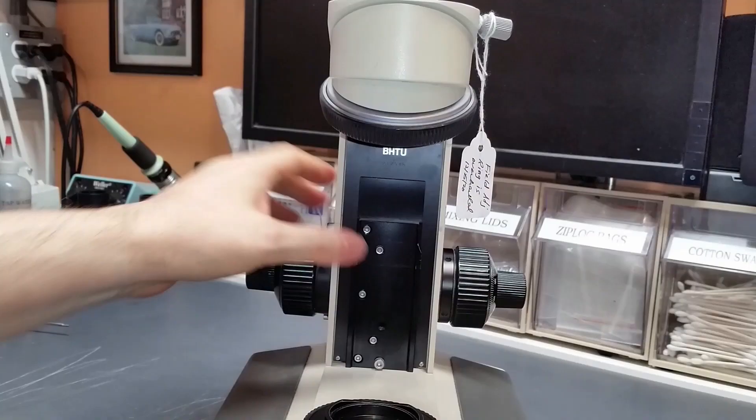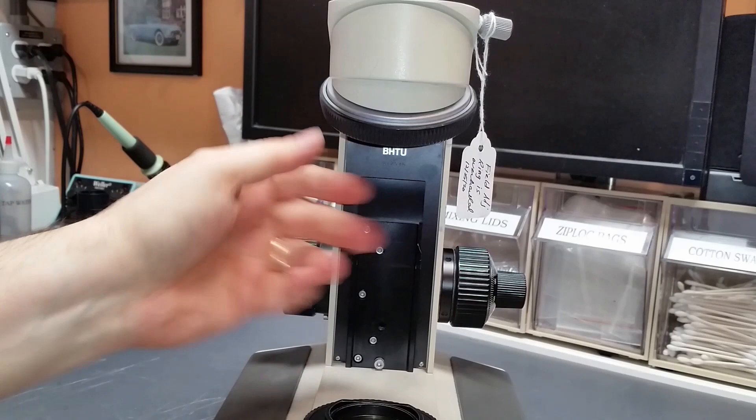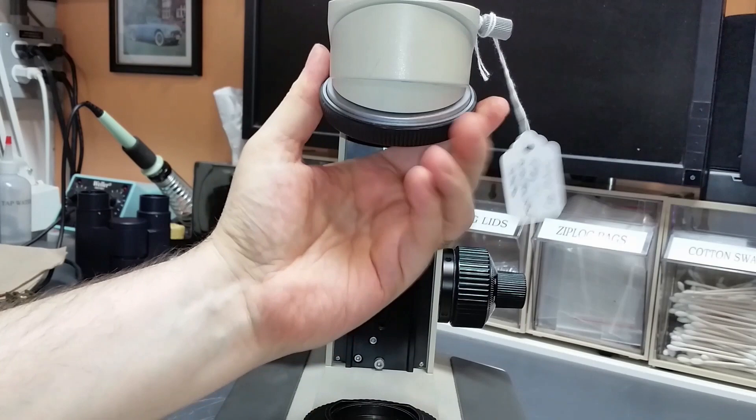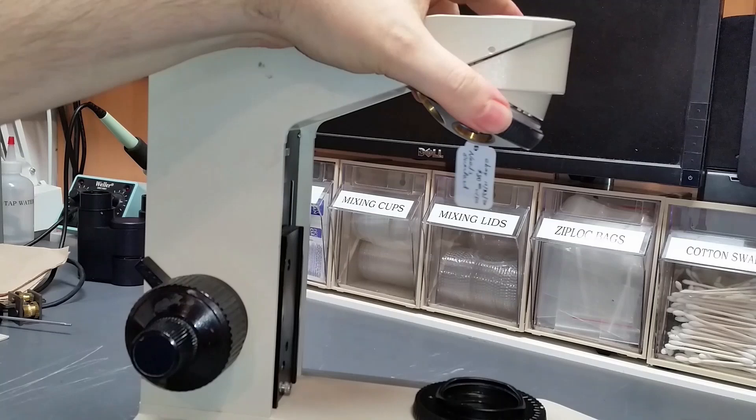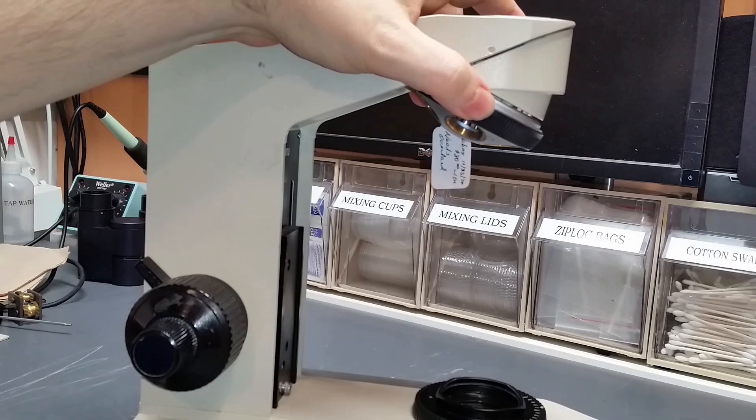I have the turret, the nose piece turret here. This is a five position BHTU reverse turret. And it's not sticky, it's not gummy, it's not stiff to turn, but it feels squeaky. It feels like the bearing balls in there are literally dry. So once again, this will come apart and be totally cleaned and put back together.